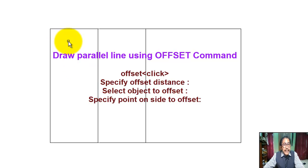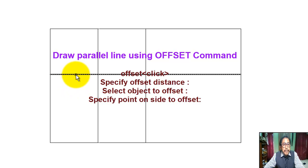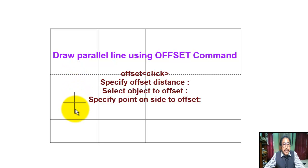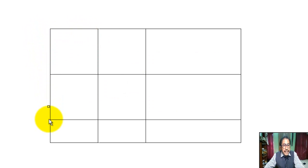Again click on offset, specify object, specify direction. Again click on offset, specify object, specify direction. The resulting divisions are: 40, 20, 20, 20, 20, 20, and 10.